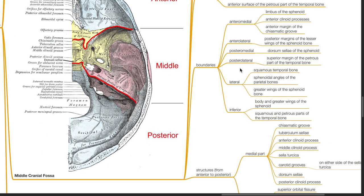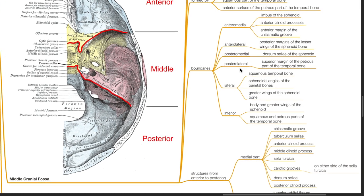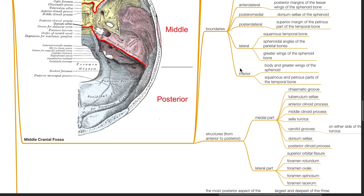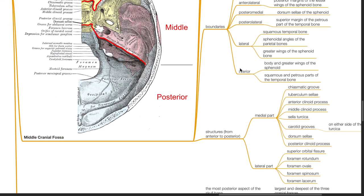Structures from anterior to posterior. In the medial part: the chiasmatic groove, tuberculum sellae, anterior clinoid process, middle clinoid process, sella turcica, carotid grooves which lie on either side of the sella turcica, the dorsum sellae, and the posterior clinoid processes. At the lateral part: the superior orbital fissure, the foramen rotundum, the foramen ovale, foramen spinosum, and foramen lacerum.